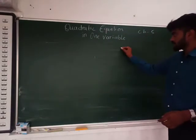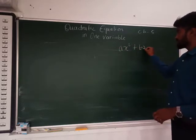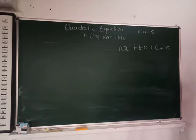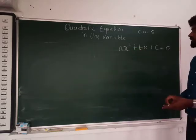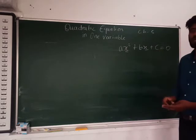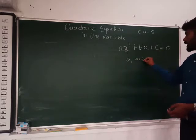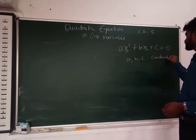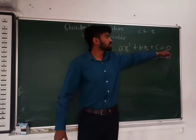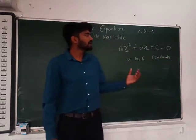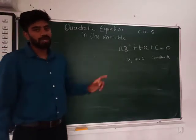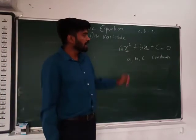A quadratic equation is always in the form ax² + bx + c = 0. You can see there's only one variable, x. You might be confused about a, b, and c — but a, b, and c are constants or numbers. Only one variable, x, is present, and on the other side of the equal sign there is zero. A quadratic equation will always have only one variable.